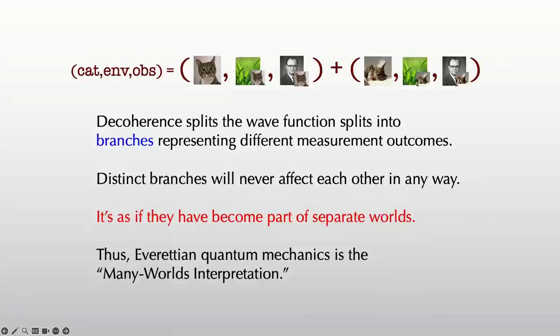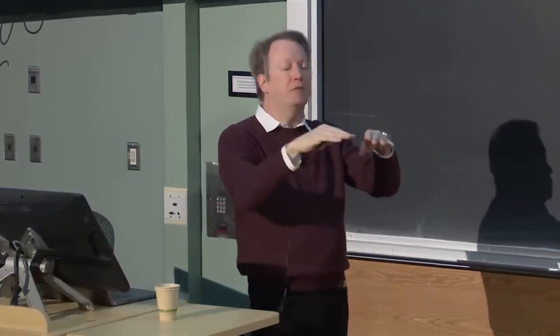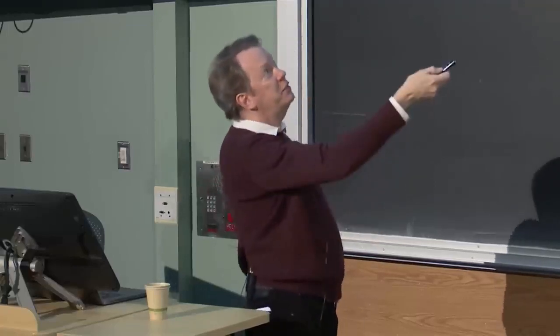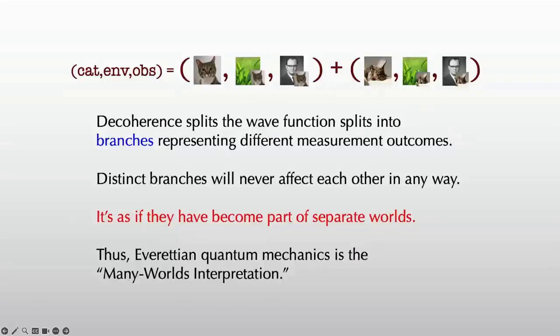And because of this decoherence effect where the environment is different in these two things, these two parts of the wave function will never influence each other ever again. Remember in the double slit experiment, the electron could go through either slit and then interfere with itself. But it interferes with itself because it's exactly the same electron doing exactly the same thing. This part of the wave function can never interfere with this part because these environments have gone their separate ways. They're completely perpendicular to each other in the literal mathematical sense.